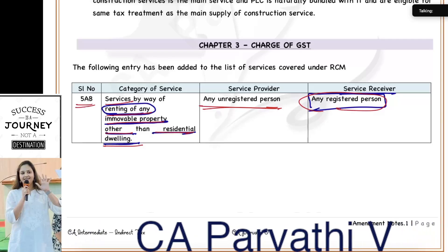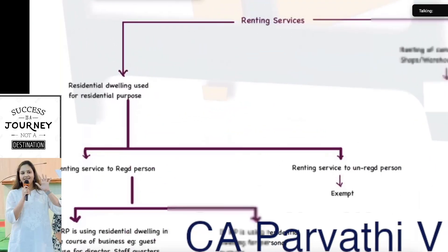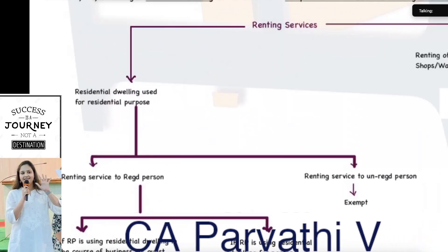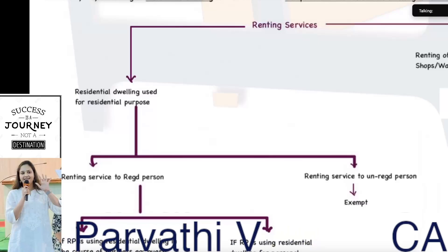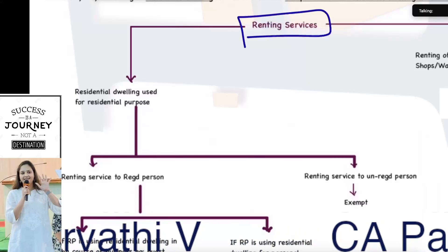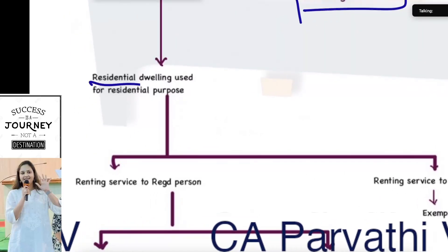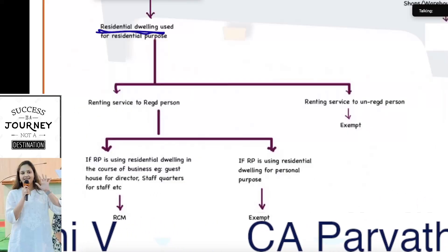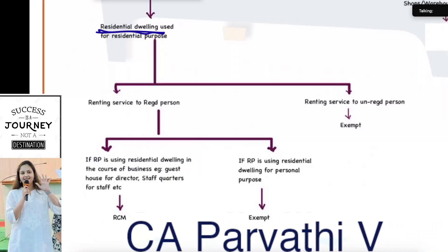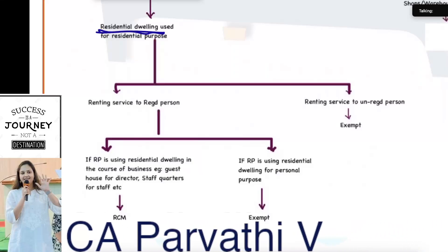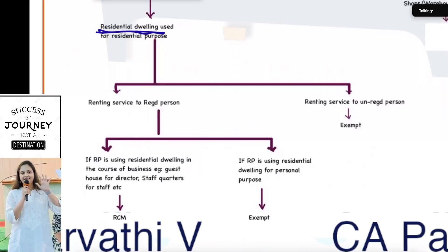Renting of immovable property other than residential dwelling by an unregistered person to a registered person falls under RCM — this is a new entry which has been added. Now, renting of residential dwelling — this is not an amendment, we already have this provision. Generally, renting of residential dwelling is exempt from GST, but in one case it is taxable, and in that case it is taxable under RCM.